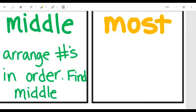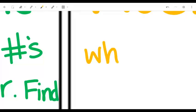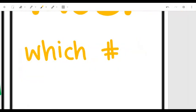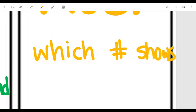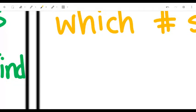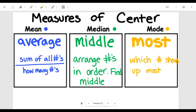So literally, which number shows up most? So let me zoom out so you get the full picture. The measures of center that we're learning about are going to be the mean, the median, and the mode. Or the average, the middle, and the most.